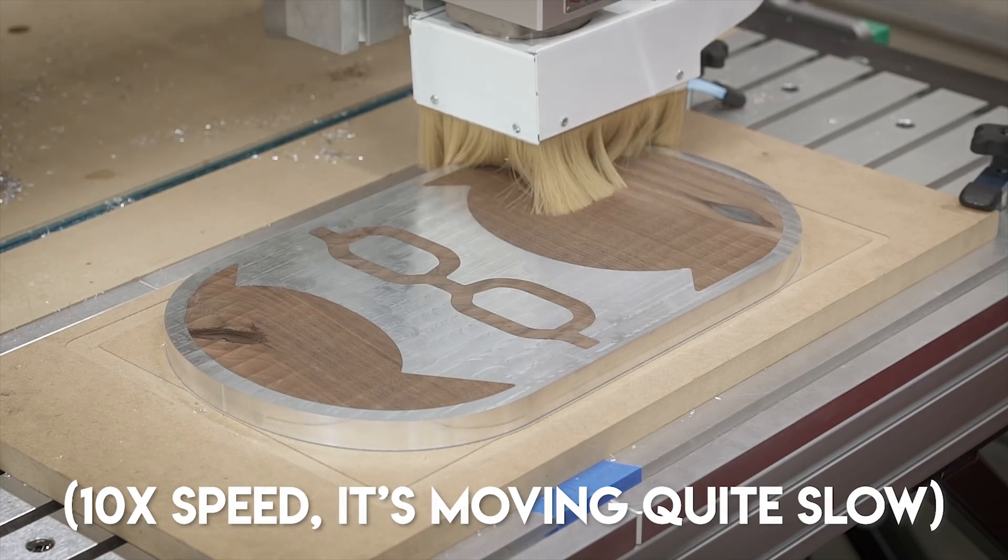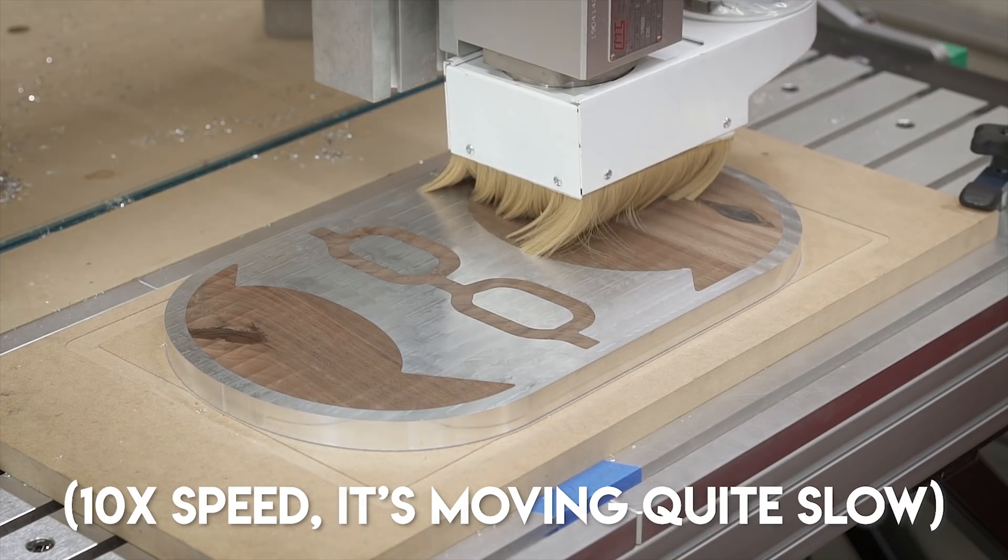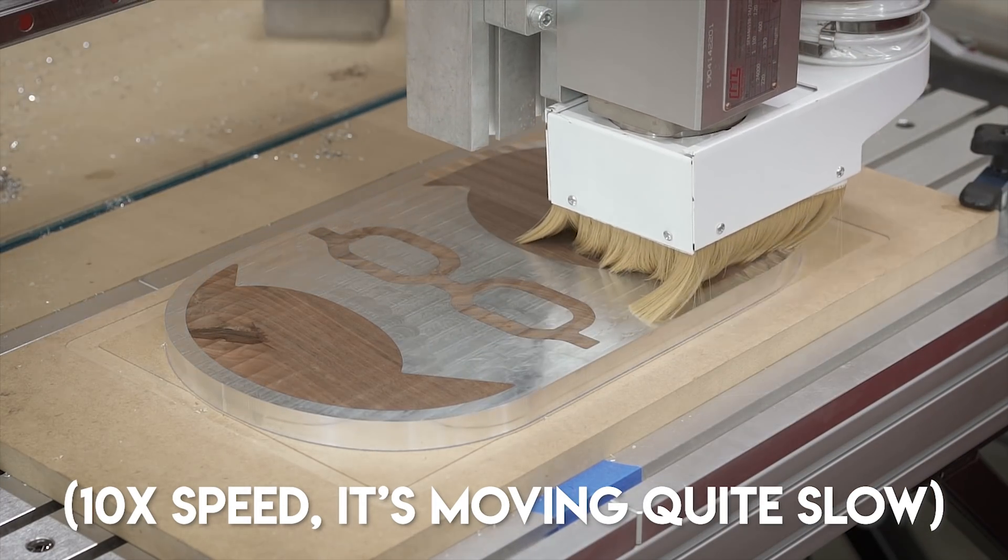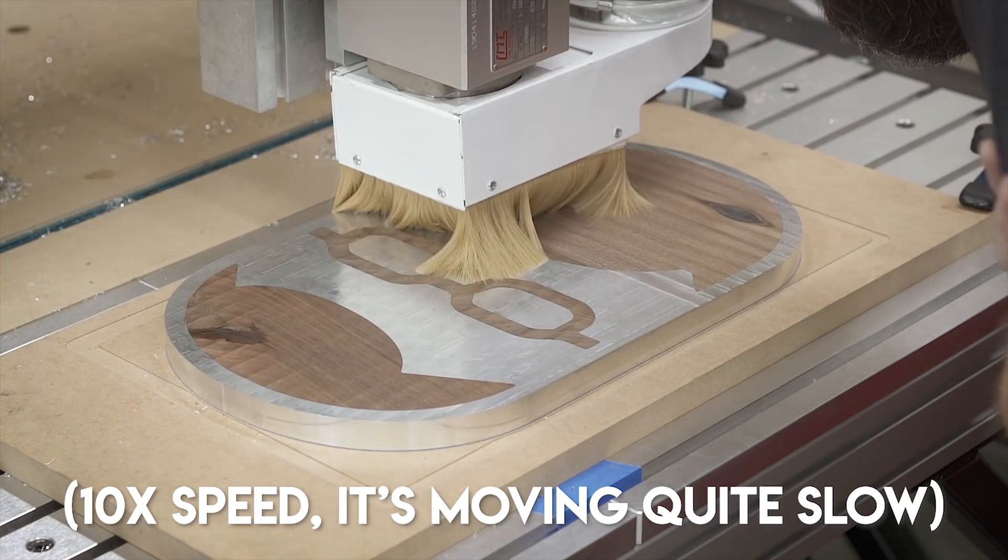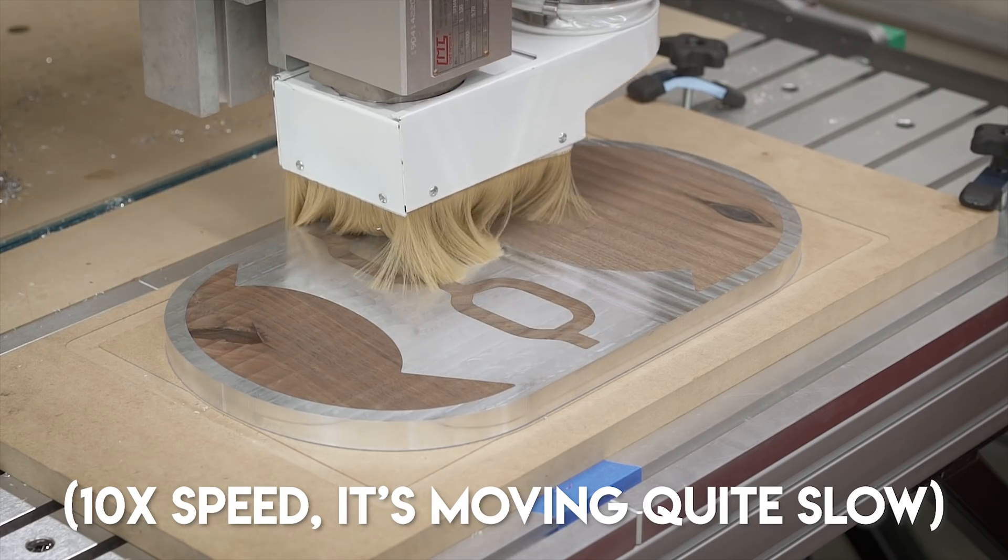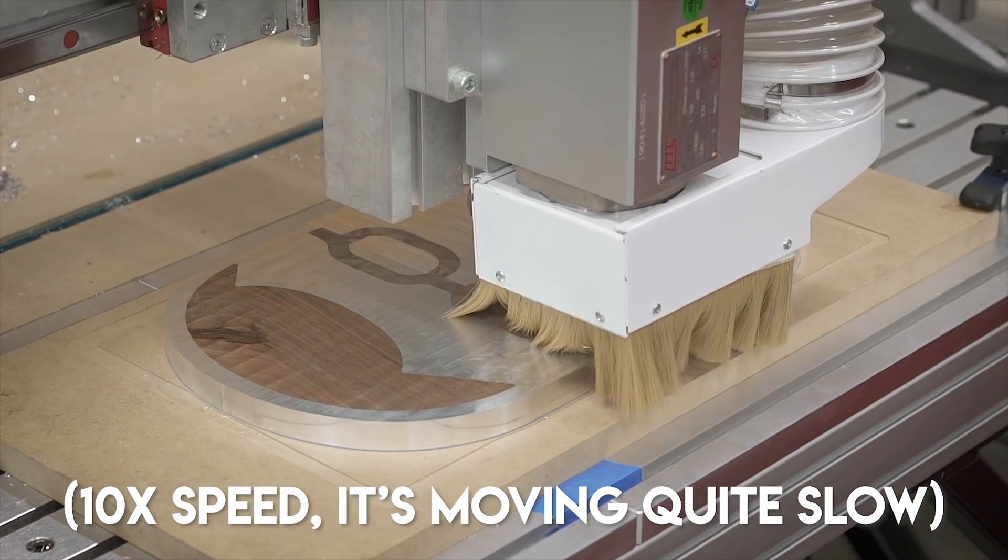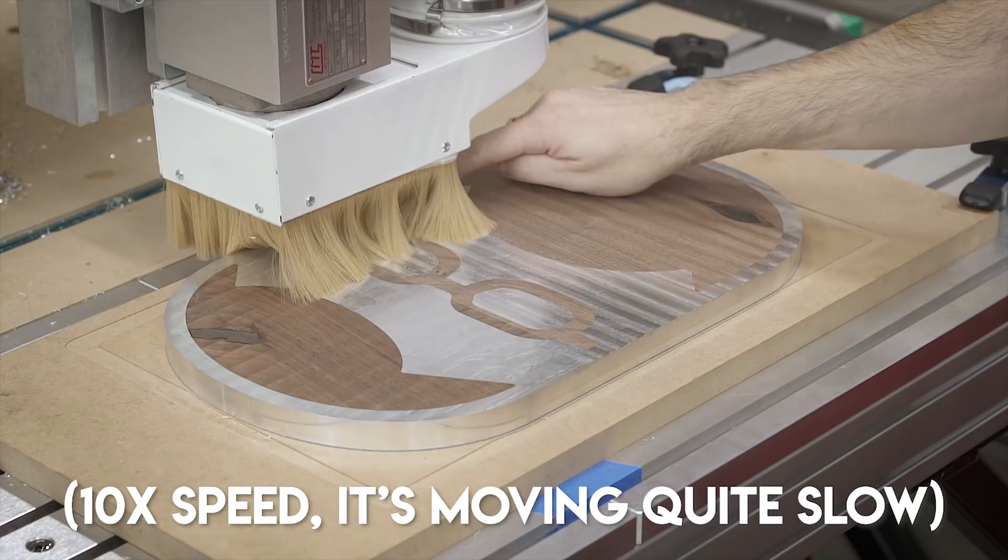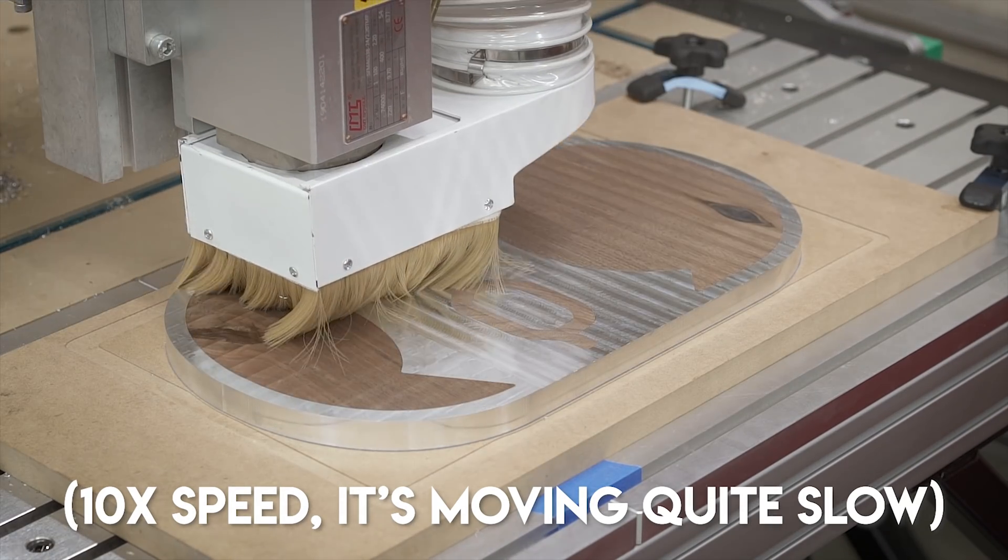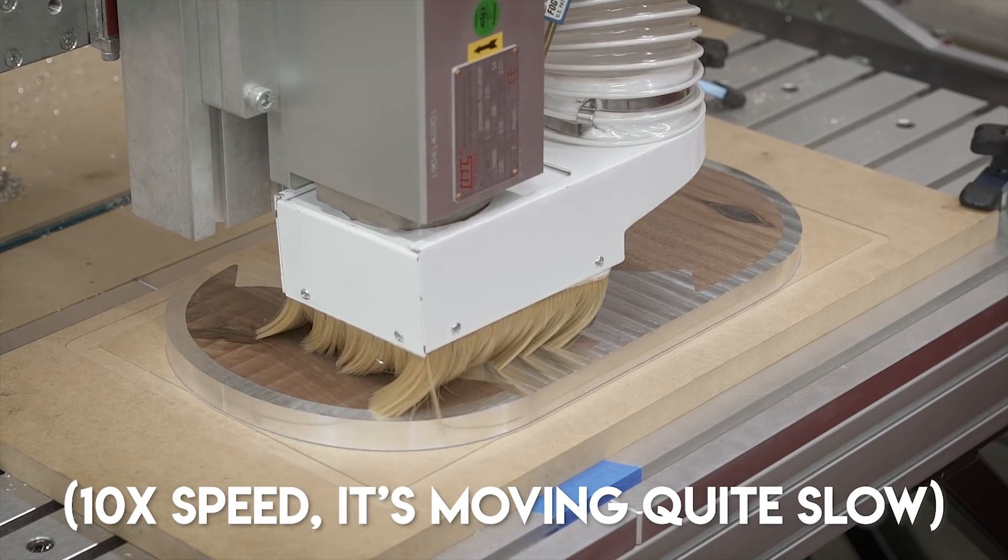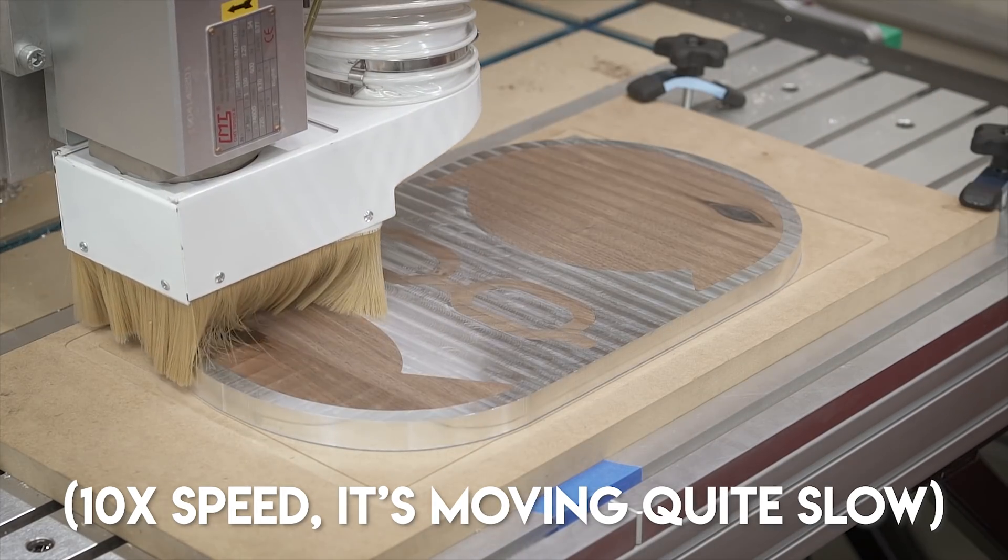So once the pour was done, I let this sit for five days. I think 72 hours or three days is the standard, but I poured this on a Sunday so I didn't get back to it until the next following Friday. So five days is how long it took to cure. And then I just faced everything down to get the epoxy level with the face. I could have probably done this where I just took off the epoxy, but it actually sunk down just enough to where 7 thousandths of an inch from the top is what I needed to make everything nice and level with that top surface.